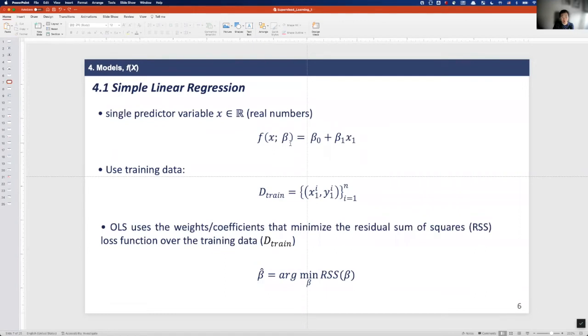To do this, we use ordinary least squares, the OLS approach. And OLS uses the weight coefficient that minimize the residual sum of squares, the RSS loss function over the training data.